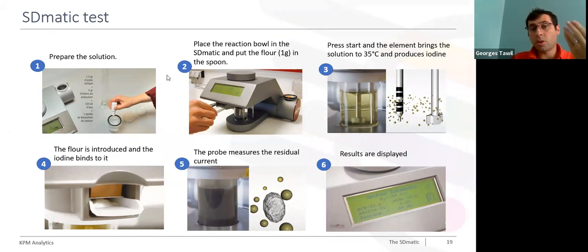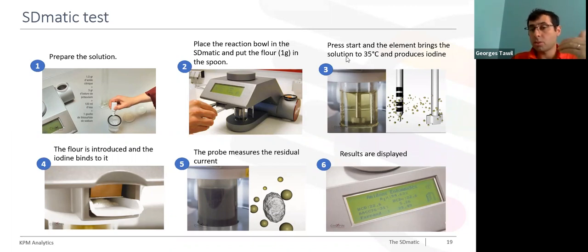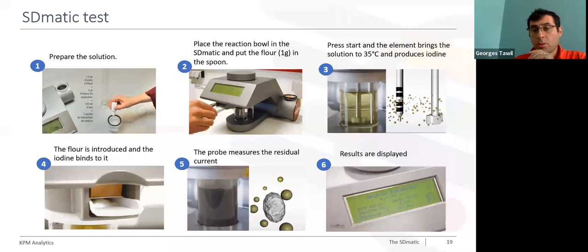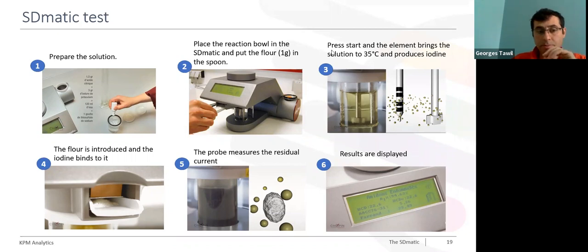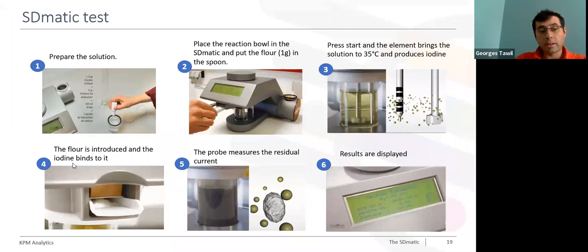Then the operator needs only to place the reaction bowl inside the SD-MATIC and put one gram of flour in the spoon. The third step is to press start, and the SD-MATIC will begin. At this stage, the heating element will bring the solution to 35°C, and at this temperature the machine will start producing iodine. In step four, the flour will be introduced automatically by vibration — the operator doesn't need to do anything — and the iodine will start to bind directly to the flour.